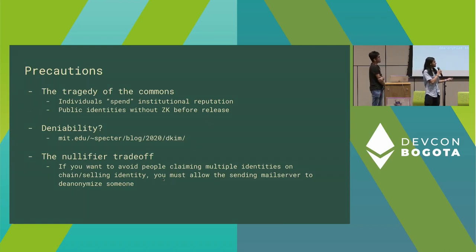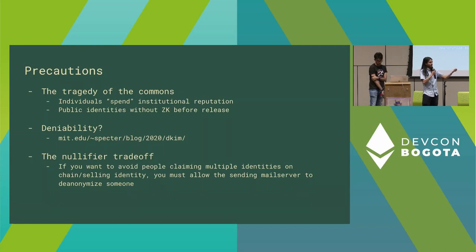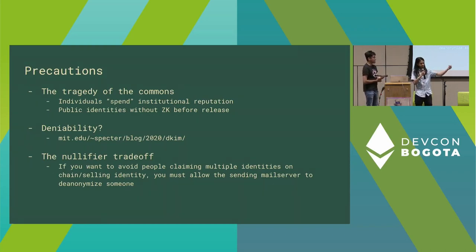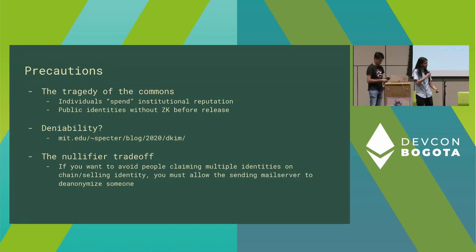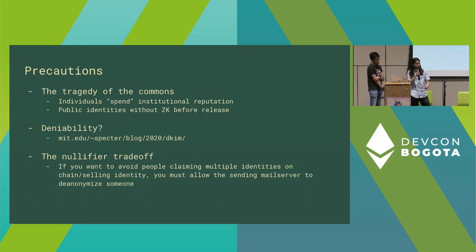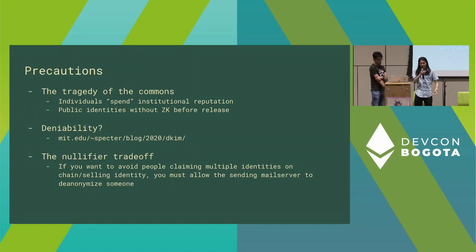Some precautions before we dive into use cases: this technology enables a tragedy of the commons on institutional reputation. Using ZK email you can prove trustlessly that you're part of some organization and act on its behalf without spending your personal reputation, meaning for the first time ever you can spend institutional reputation with no personal accountability. This is quite dangerous, so we think it's important to have ZK nullifiers or other mitigations to think about how to release this technology safely.